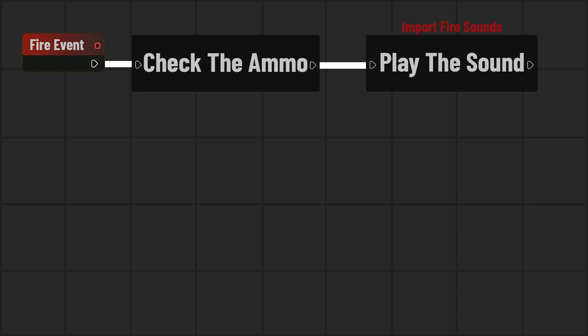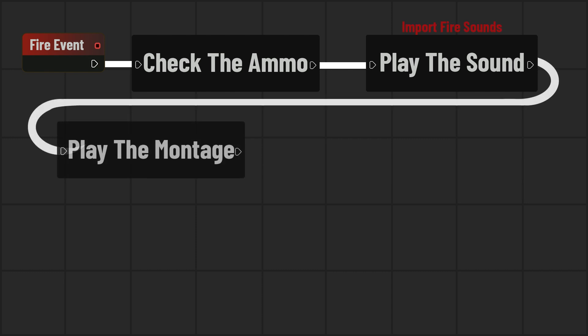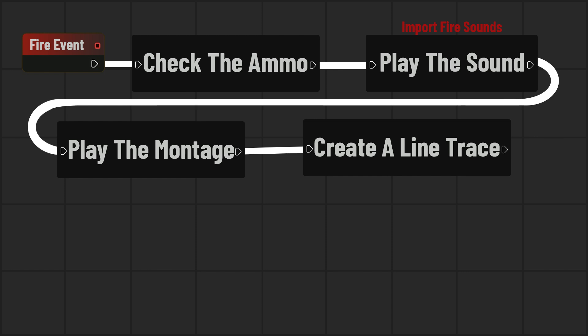We will import these sounds in this tutorial. Then we play the animation montage imported in the previous videos, which also triggers the weapon animations. After that, we create a line trace. Line traces are like lasers, and we calculate our bullet's functions with this laser. If it hits or overlaps with something, we can know it from this line trace.